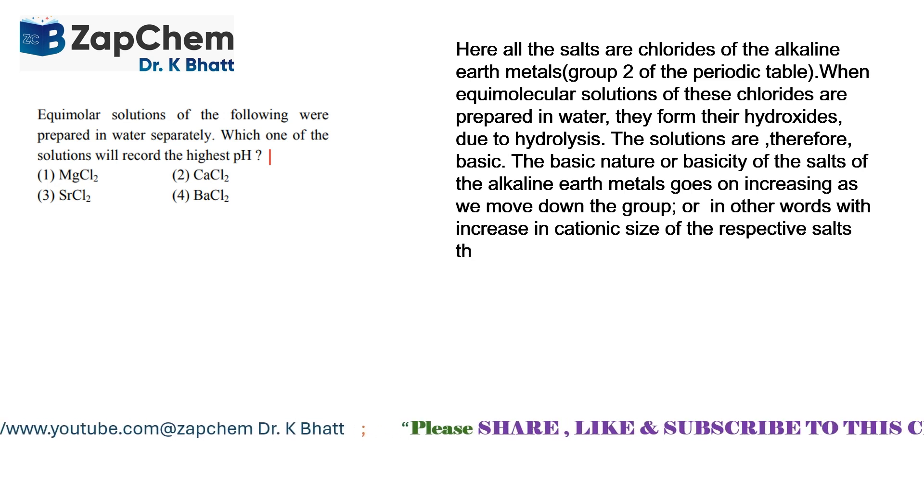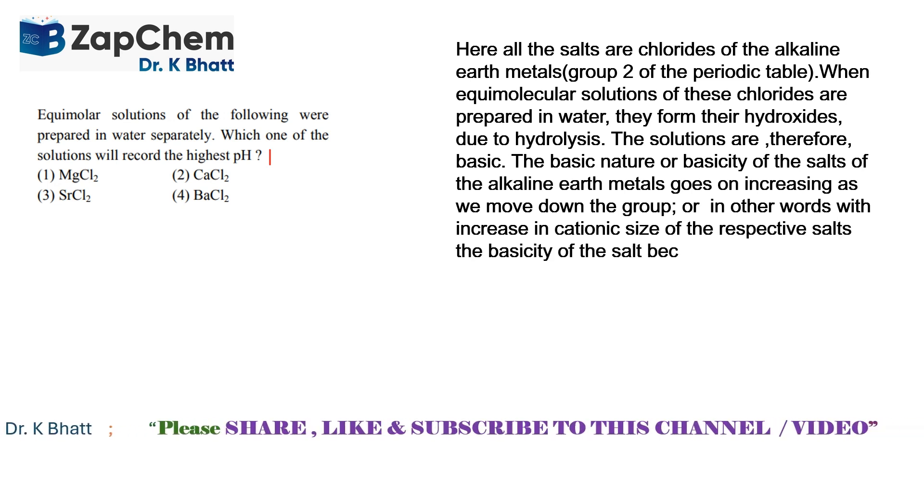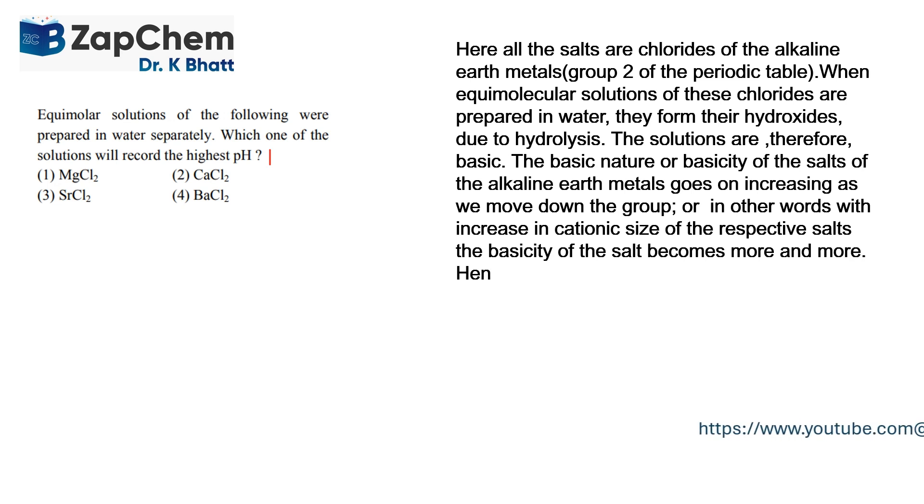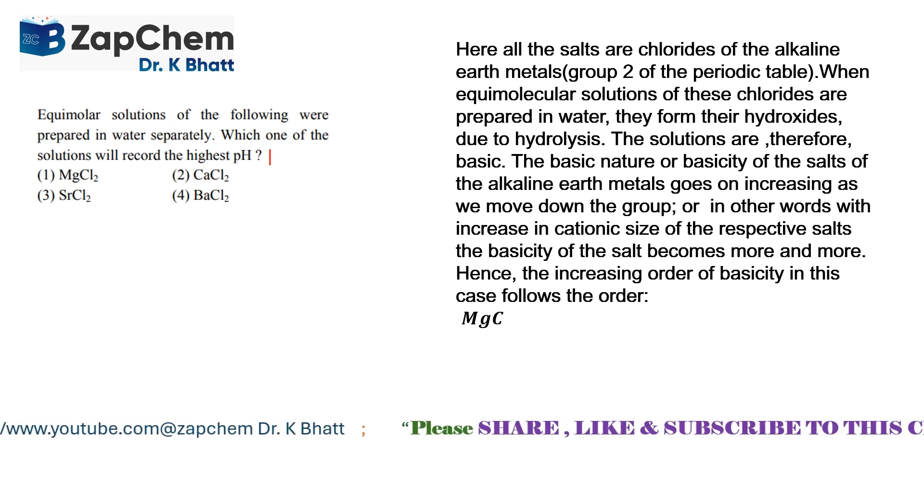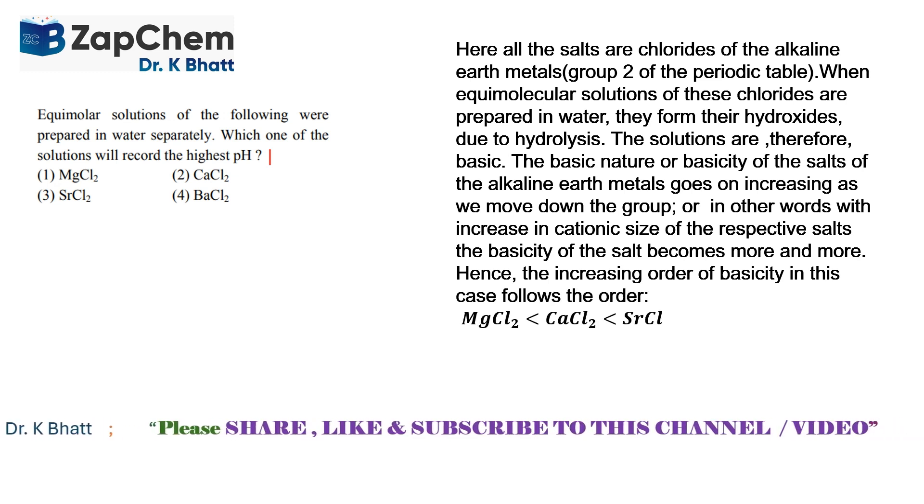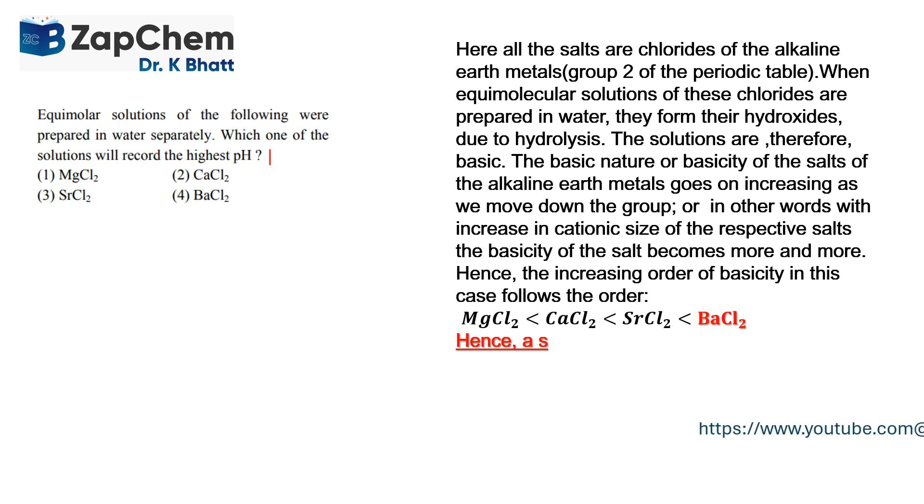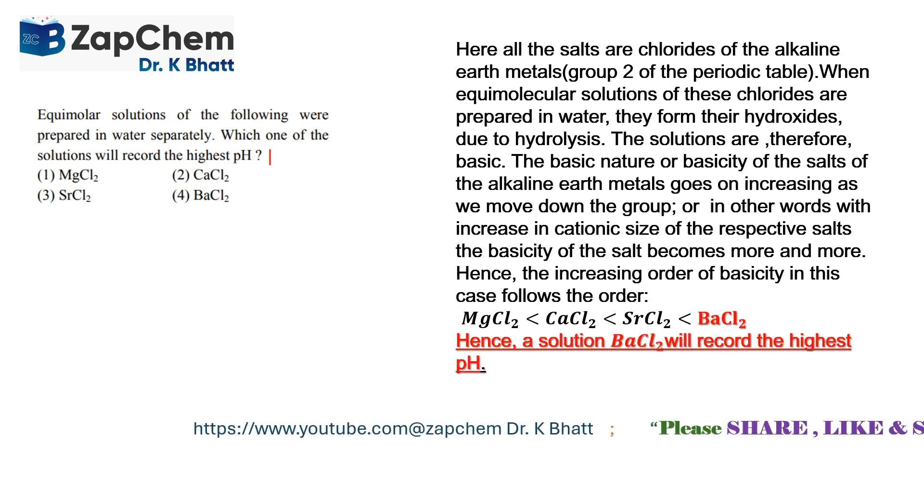We find that after magnesium comes calcium, then strontium, then barium. Barium has got the highest size and therefore has got the highest basicity. The increasing order of basicity as we find here is MgCl2 is the least, then more is calcium chloride, then strontium chloride, then barium chloride.